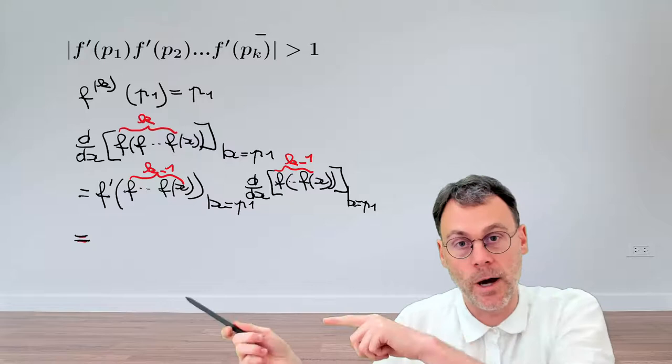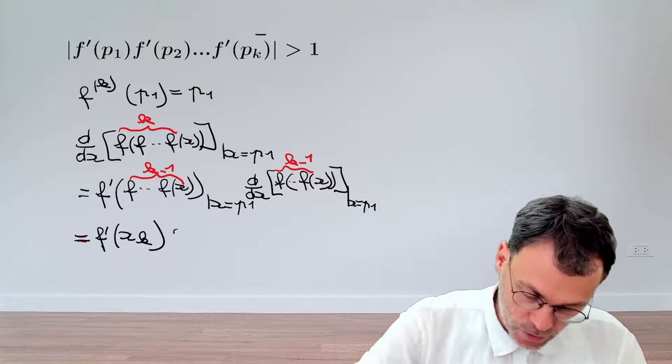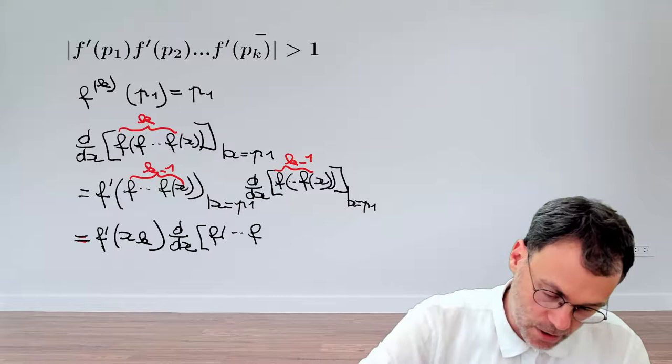So this reduces to f prime of pk. And then we just copy d/dx applying f k minus 1 times at the point p1.